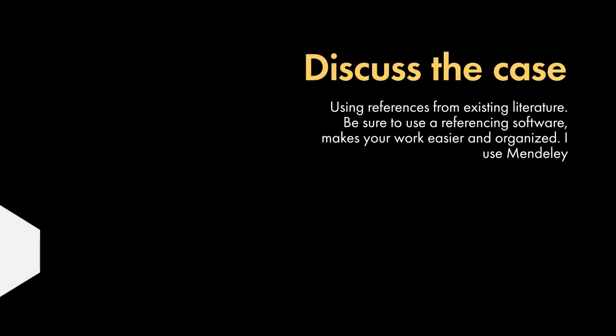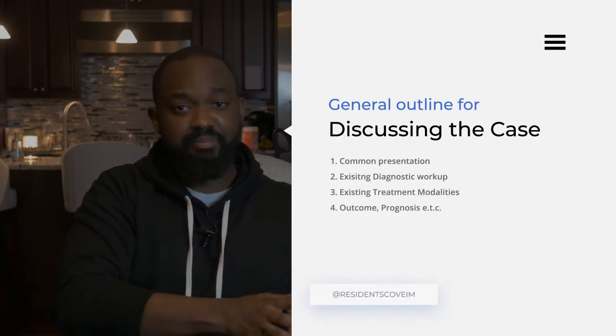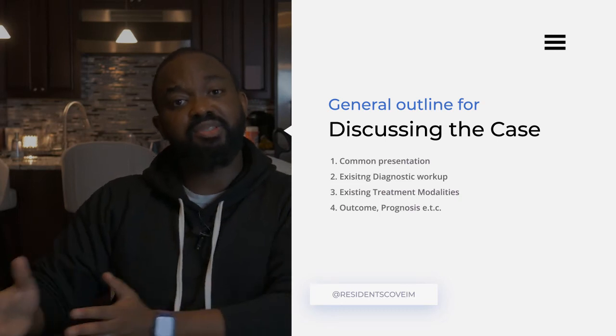The next thing you do after you've gotten the case, checked the literature, and written it down like a regular H&P with all of its components, is to discuss it. This is perhaps the more tedious part of the work, because now you have to go back into literature, look at similar cases, and use those cases to reference the discussions you'll be having. In the discussion, you typically want to go from the presenting complaint — what is specific and unique to this case — then to your diagnostic workup.